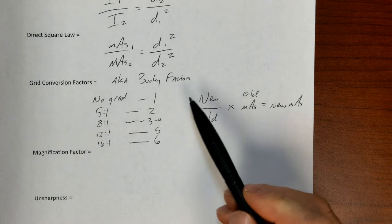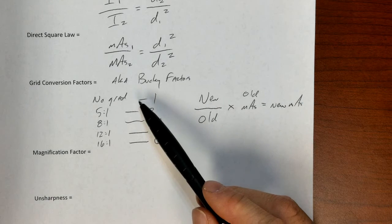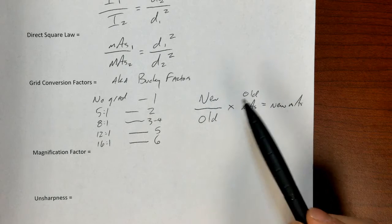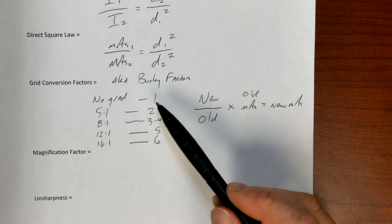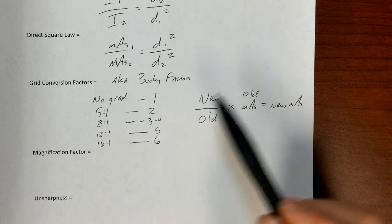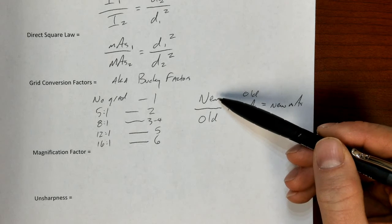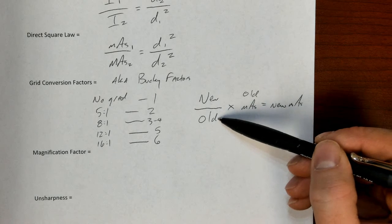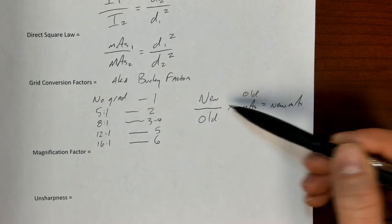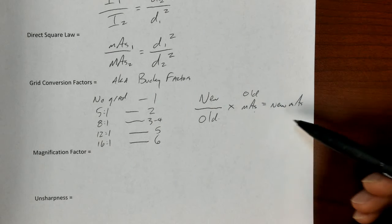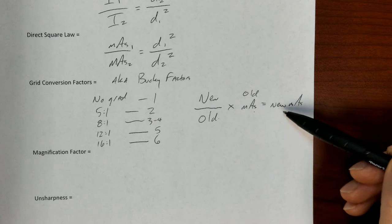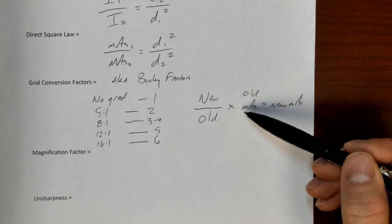Picture looks crummy. So we need to use a grid. We know what the mAs was. We're going to use a 5 by 1 grid. We'll put the 5 by 1. We'll put the 2 on top. Put the 1 on the bottom. Multiply 2 times the old mAs to give us the new mAs. So basically the new mAs will be 2 times what the old mAs was.